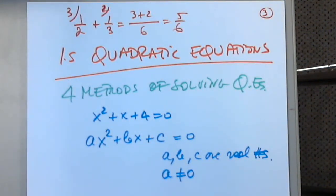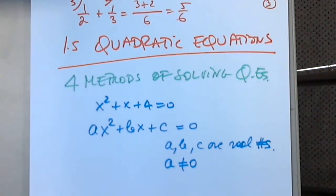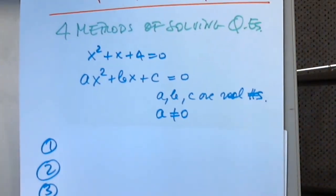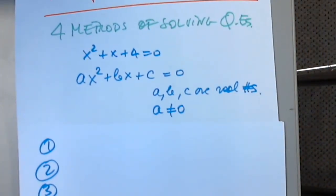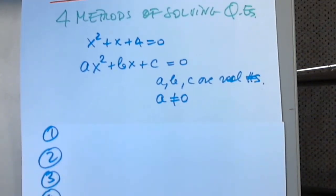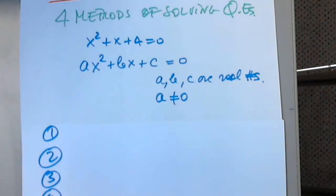If a equals 0, the equation becomes linear, not quadratic. We have four methods. Method number one is factoring. In my opinion, factoring is not absolutely mandatory — because there's something else I'll list in a minute that can bypass it. But factoring is useful when it can be done quickly.